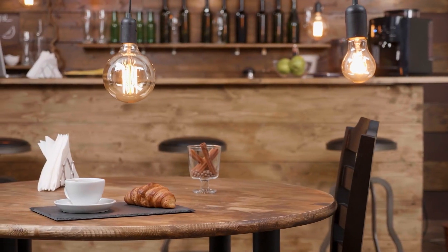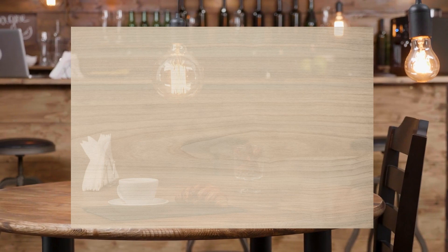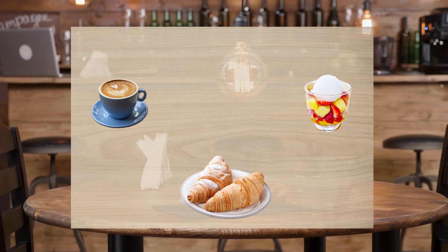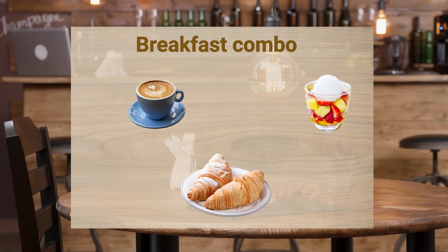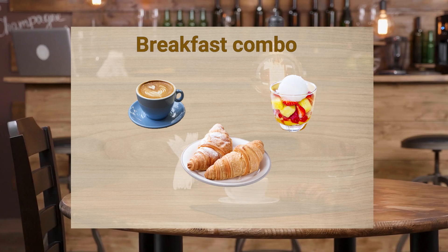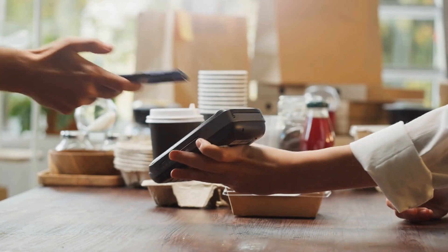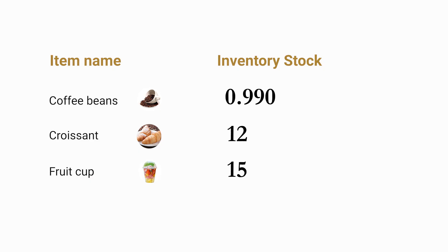For example, let's say you run a cafe and offer a breakfast combo that includes a coffee, croissant, and fruit cup. You can create a composite item in Loyverse with a special price called 'breakfast combo' and add the coffee, croissant, and fruit cup as its components. When a customer purchases the breakfast combo, Loyverse will automatically deduct the inventory of each component item from your stock and update your sales records accordingly.